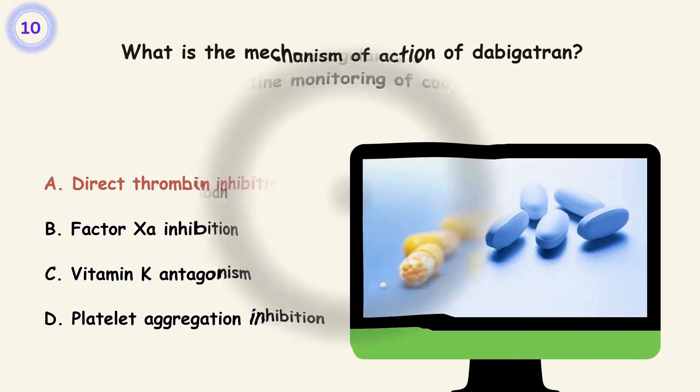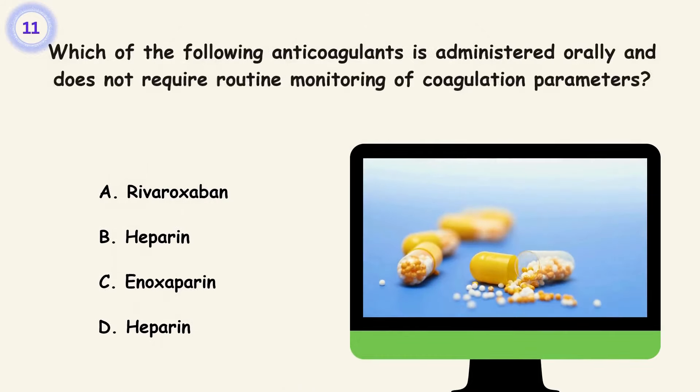Question 11. Which of the following anticoagulants is administered orally and does not require routine monitoring of coagulation parameters? A. Rivaroxaban. B. Heparin. C. Enoxaparin. D. Heparin. Answer is A. Rivaroxaban.